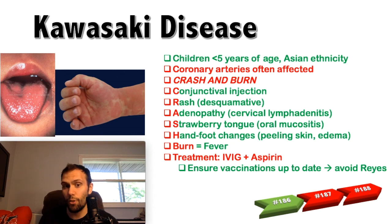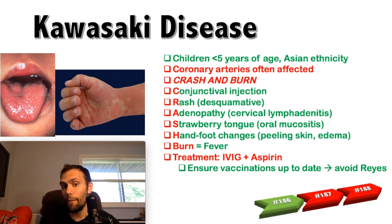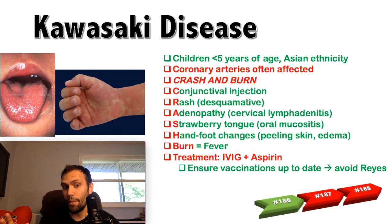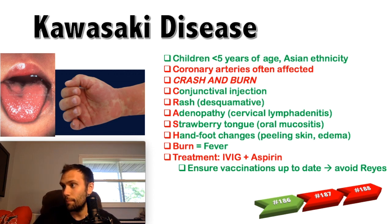Acetaminophen and ibuprofen are not the right answers for Kawasaki disease on a board question. The correct treatment is IV immunoglobulins and aspirin. When you give IVIG and aspirin, the fever will subside in about two days. This is important because the longer the fever continues, the higher the risk of cardiac involvement.